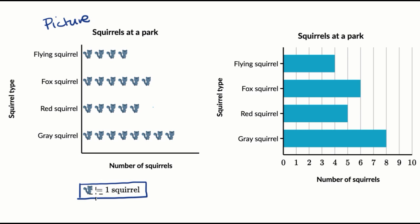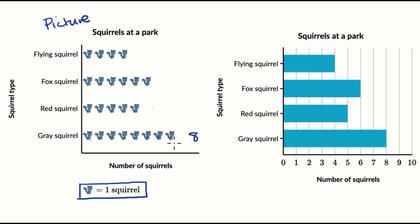It's pretty straightforward, but it could have been two squirrels or three squirrels. So if you want to know which one has the most — and it would have been the most regardless of what the key said — you can see just by looking at it that there are the most gray squirrels. There are the most number of these little squirrel pictures. We can actually count exactly: one, two, three, four, five, six, seven, eight pictures. Each of them represents one squirrel, so there are eight gray squirrels.